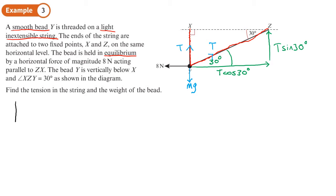Let's start with the forces which are vertical. And going up, we have T sin 30 and T and that equals the force going down, which is mg, two unknowns, T and mg. So we need to look at the forces horizontally as well. And horizontally, we will have 8 equals T cos 30.